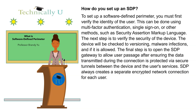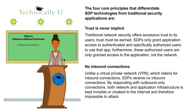The next step is to verify the security of the device. The device will be checked for versioning, malware infections, and whether it is allowed. The final step is to open the SDP gateway to allow user passage after ensuring the data transmitted during the connection is protected via secure tunnels between the device and the user's services. SDP always creates a separate encrypted network connection for each user.